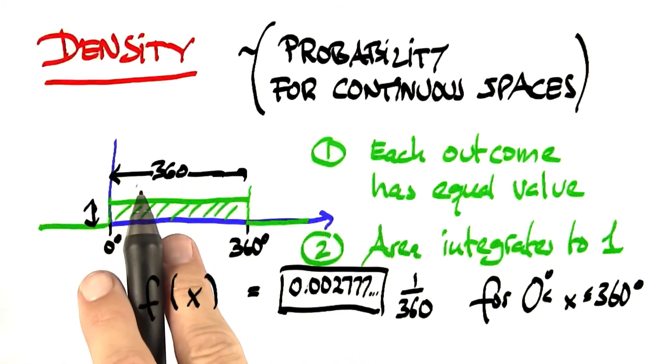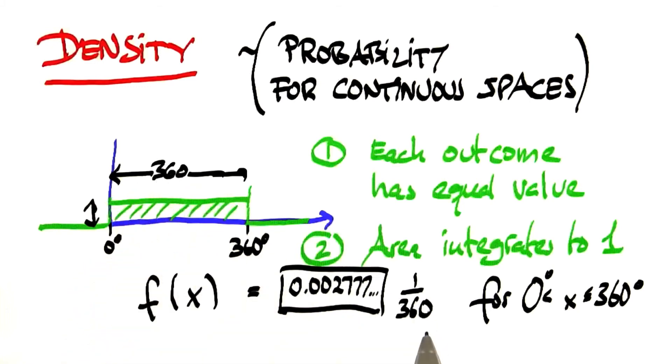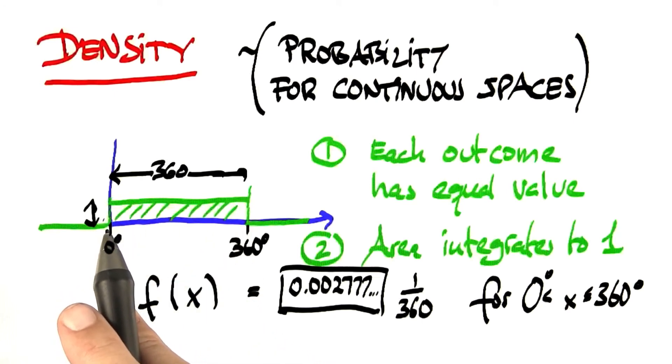But if we multiply 360 by 1 over 360, then the area of this rectangle over here becomes 1. So let's do this again.